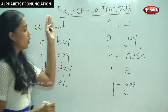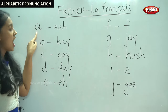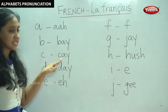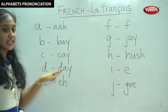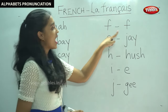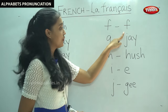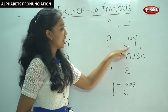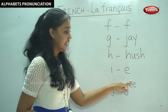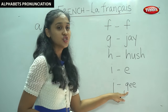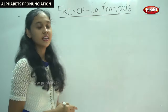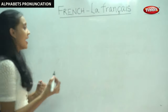Let us go over this once more: A, B, C, D, A, F, J, Hush, E and G. Now let us go over to the next set of alphabets.